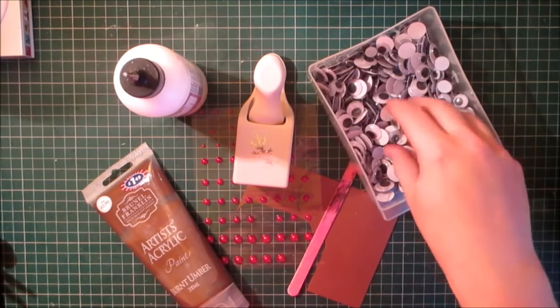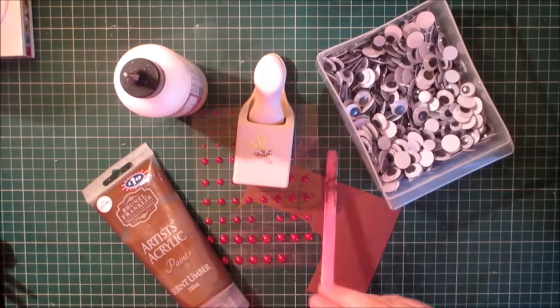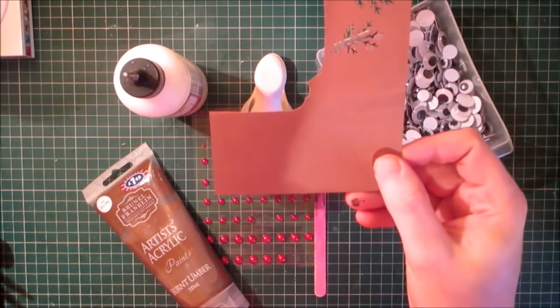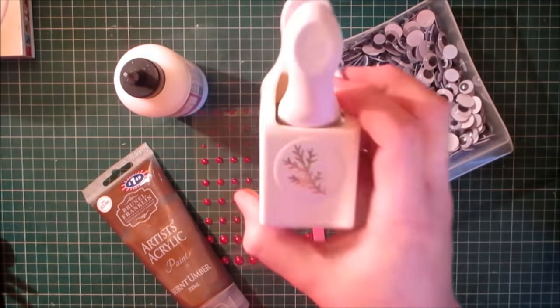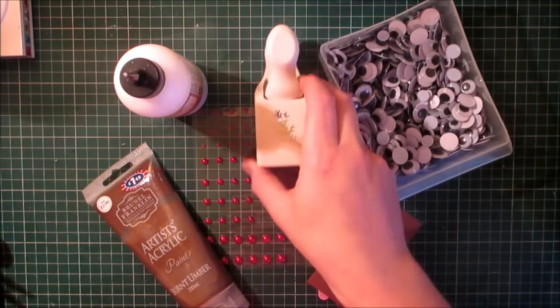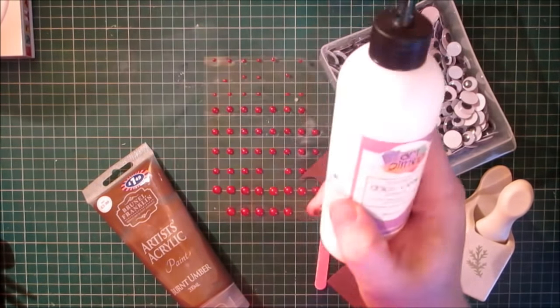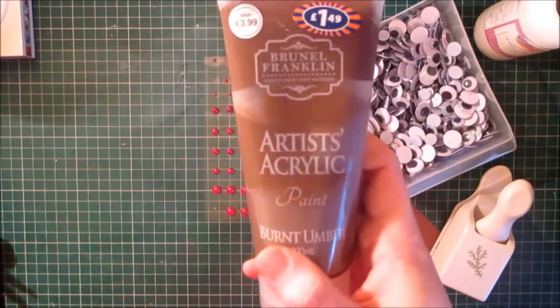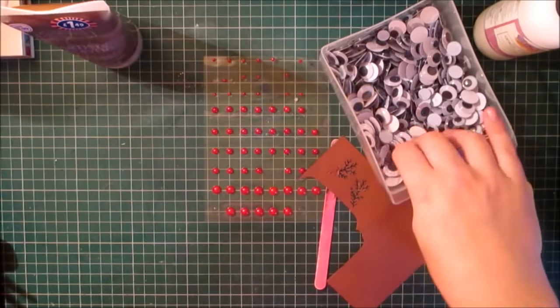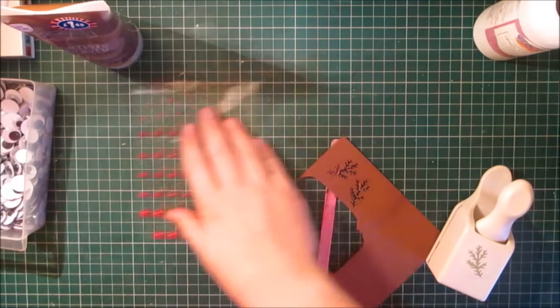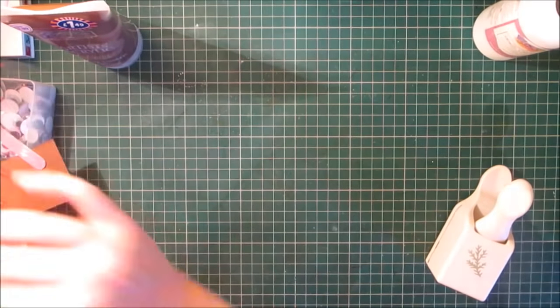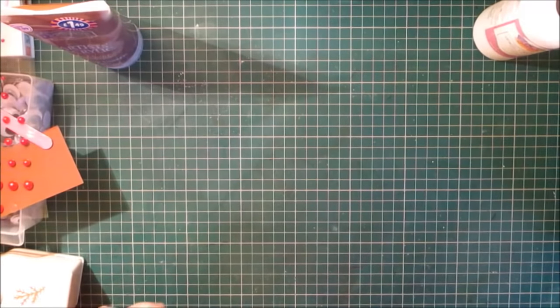So you'll need some wiggly eyes, a nail file, a scrap piece of brown card, your Martha Stewart twig punch, some flat back gems, your glitter glue, and some brown paint depending on what you use.